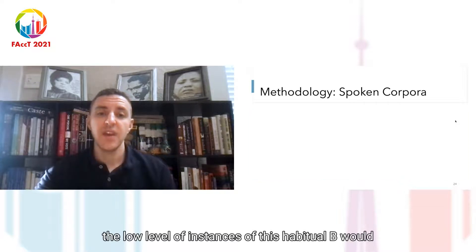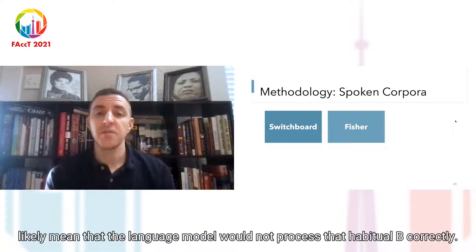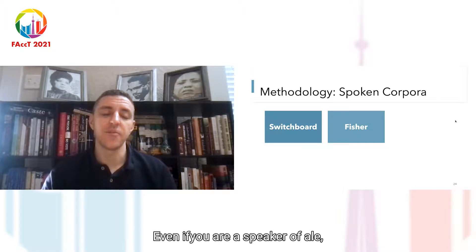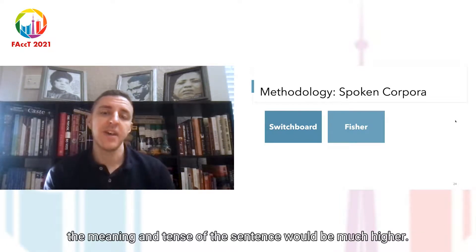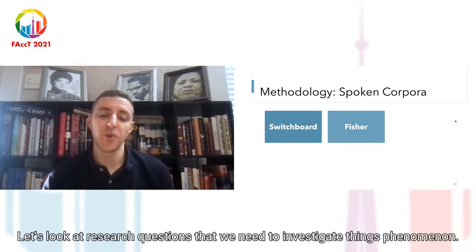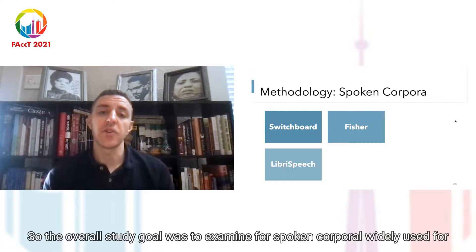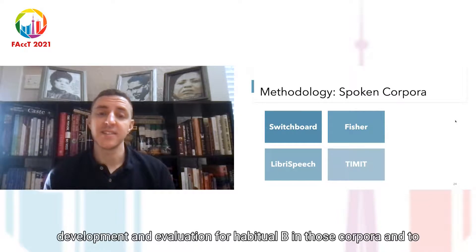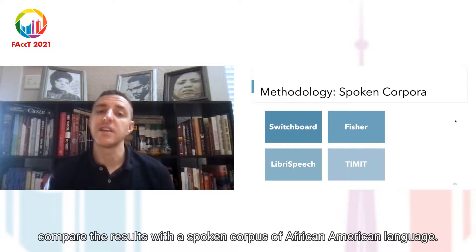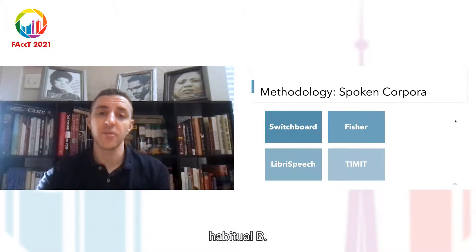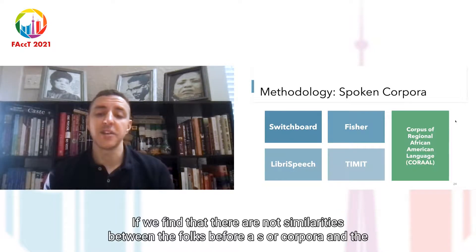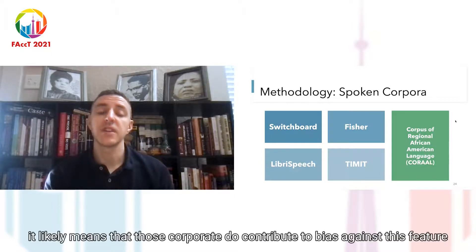Let's talk about the corpora we'll use. We first have Switchboard and Fisher — both conversational data gathered from telephone conversations arranged by a computer system. Switchboard here is actually the combination of Switchboard and Hub 5, an additional set of 40 interviews subsumed under Switchboard. We also have LibriSpeech, a spoken corpus of read books from the LibriVox audiobook recordings. And finally, we have TIMIT, a spoken corpus of read sentences constructed to elicit the most diverse set of phonological variation possible in English for use in ASR development. Those are our four ASR corpora, which we compare to the Corpus of Regional African-American Language (CORAAL) — a corpus of sociolinguistic interviews with African-American speakers over many time periods in different regions of the United States.